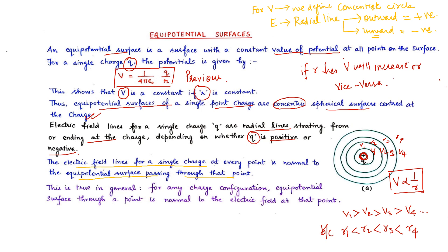We have previously read about these tangents — the electric field lines made around a charge and for a particular position we define these tangents, which give us the direction of our electric field lines. This is true in general: for any charge configuration, the equipotential surface through a point is normal to the electric field at that point.